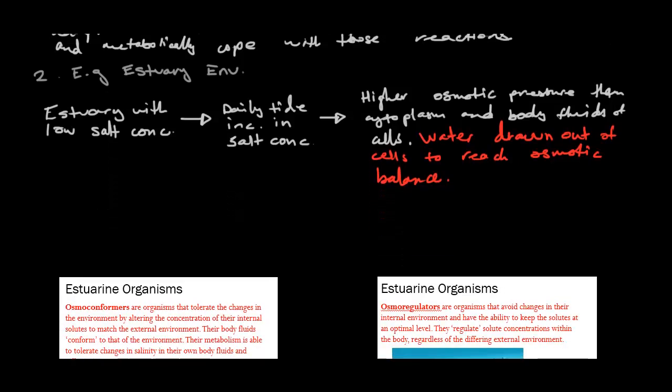In the next diagram, it's talking about estuary environments. If we have an estuary with low salt concentration, a daily tide comes in and an increase in salt concentration occurs. The higher osmotic pressure in the cytoplasm and body fluids of the cells causes water to draw out of the cells to reach osmotic balance — this happens through osmosis. So the biggest challenge for organisms living in estuaries is osmoregulation.